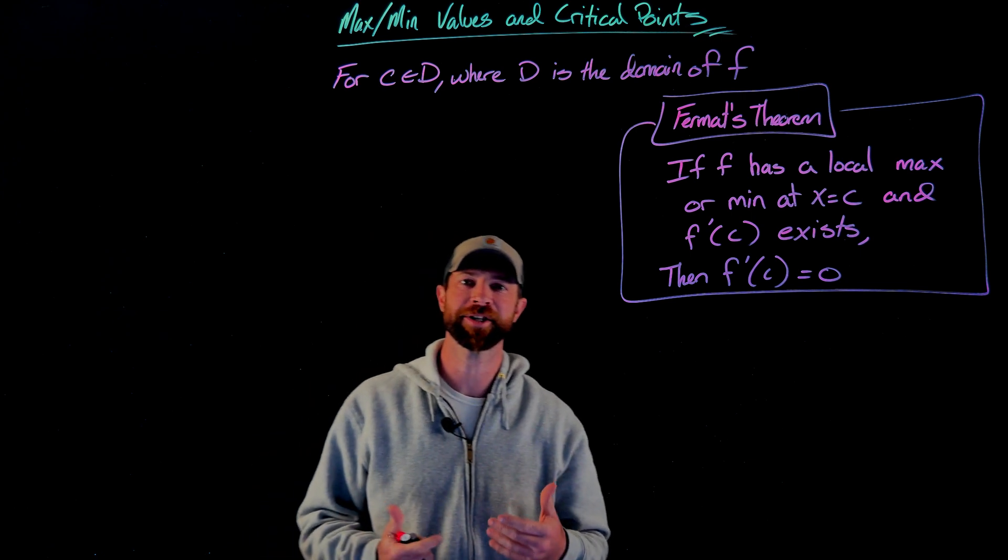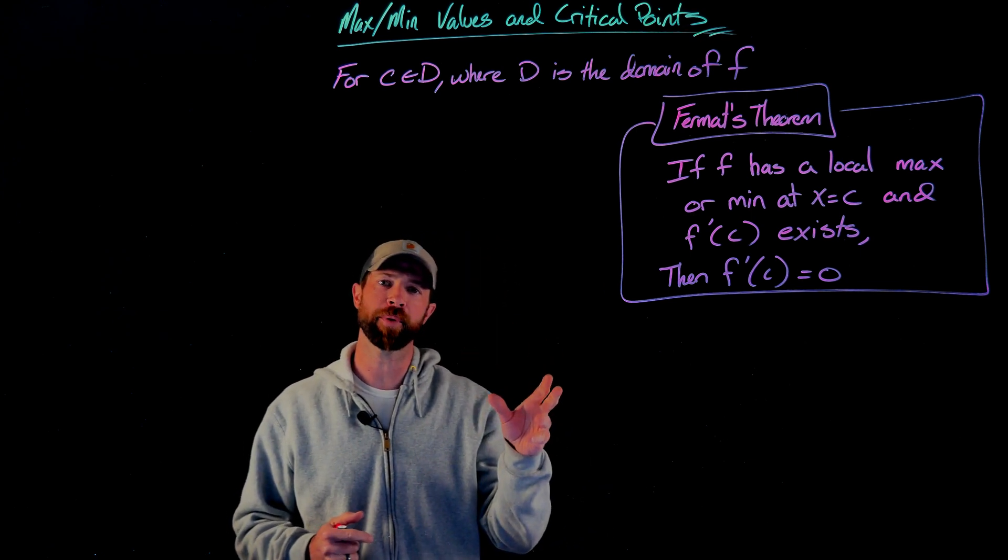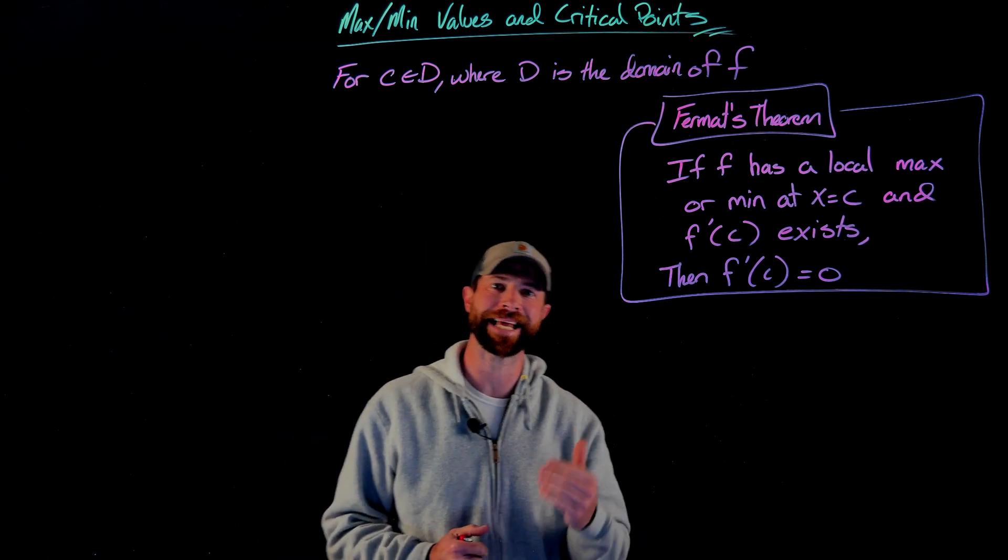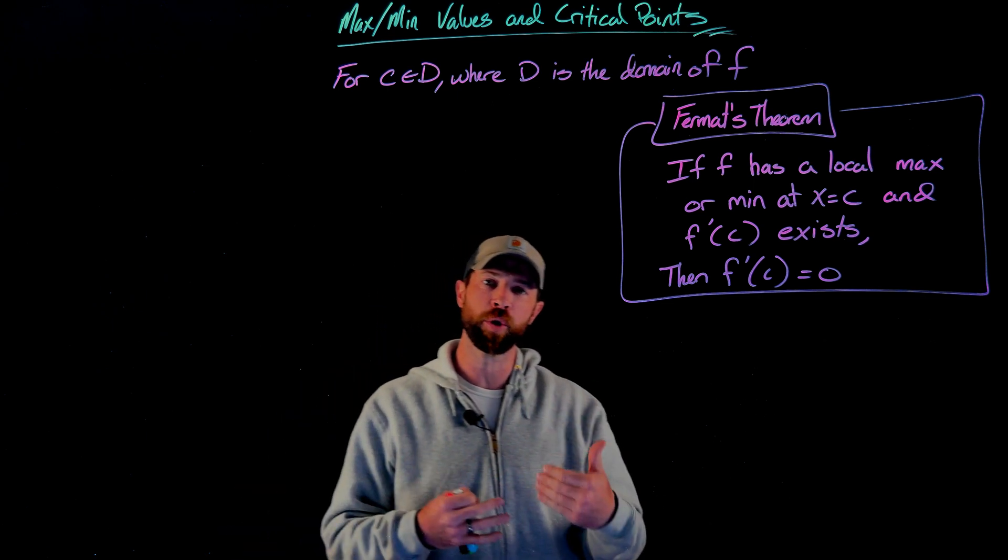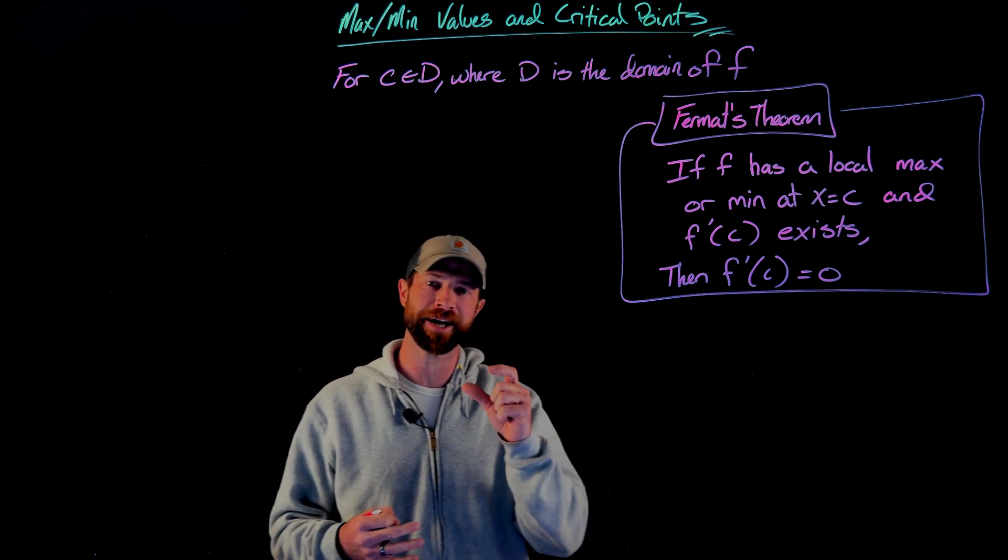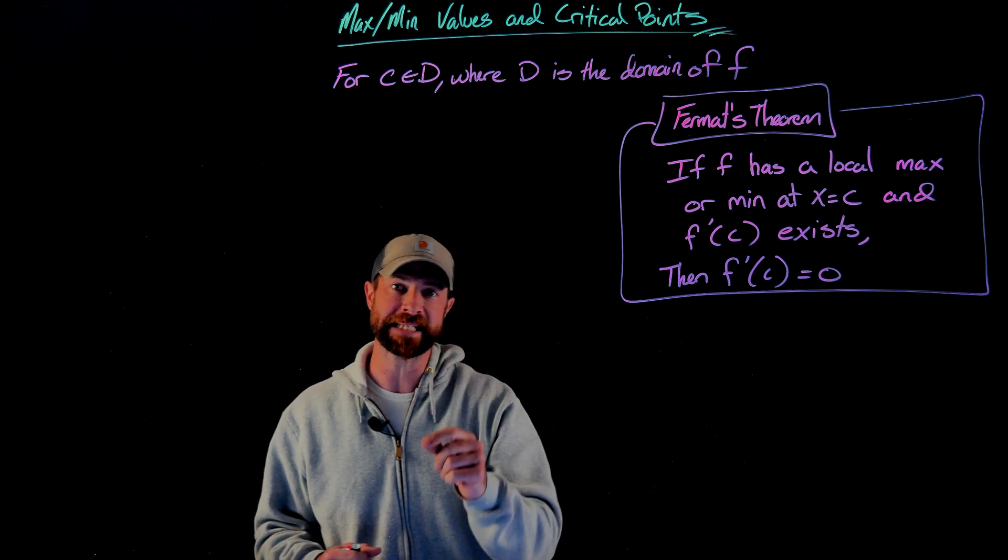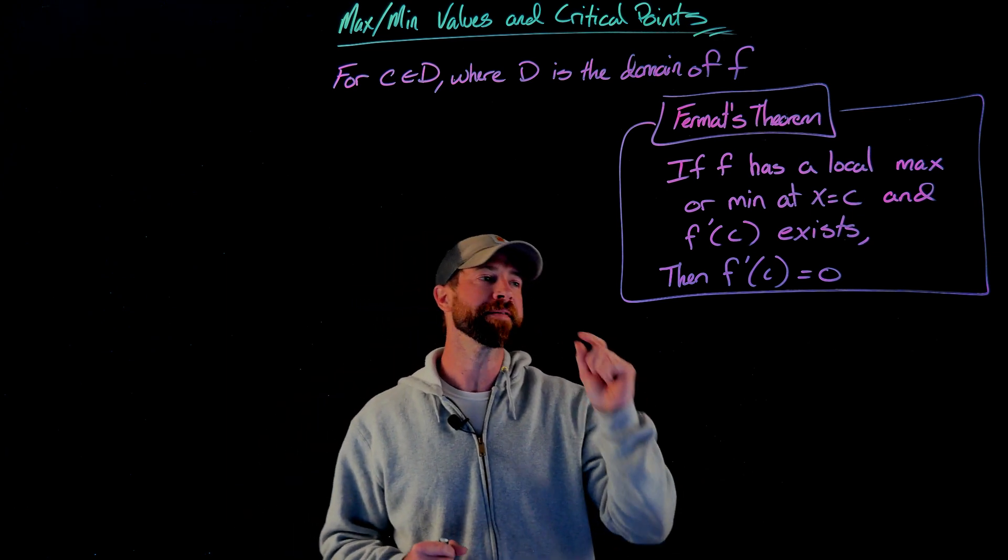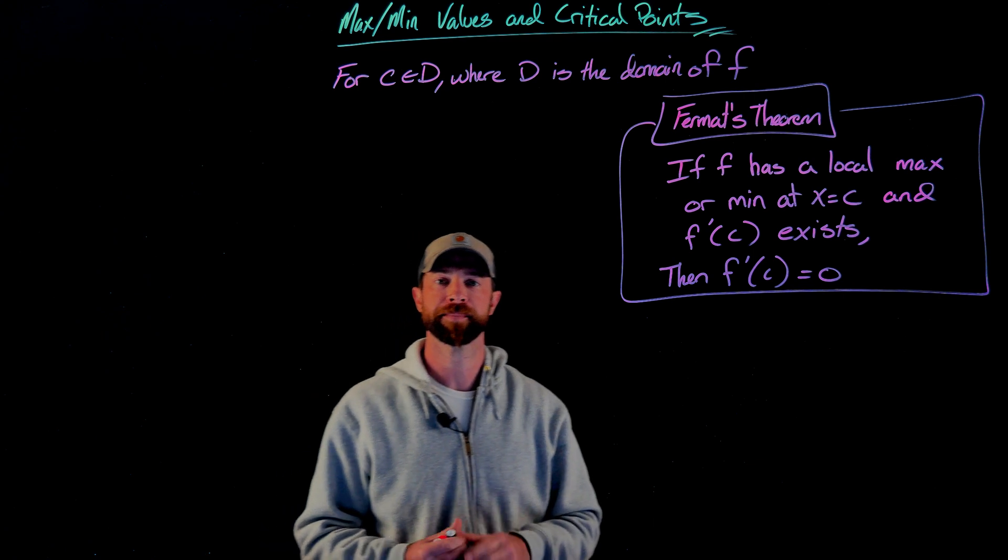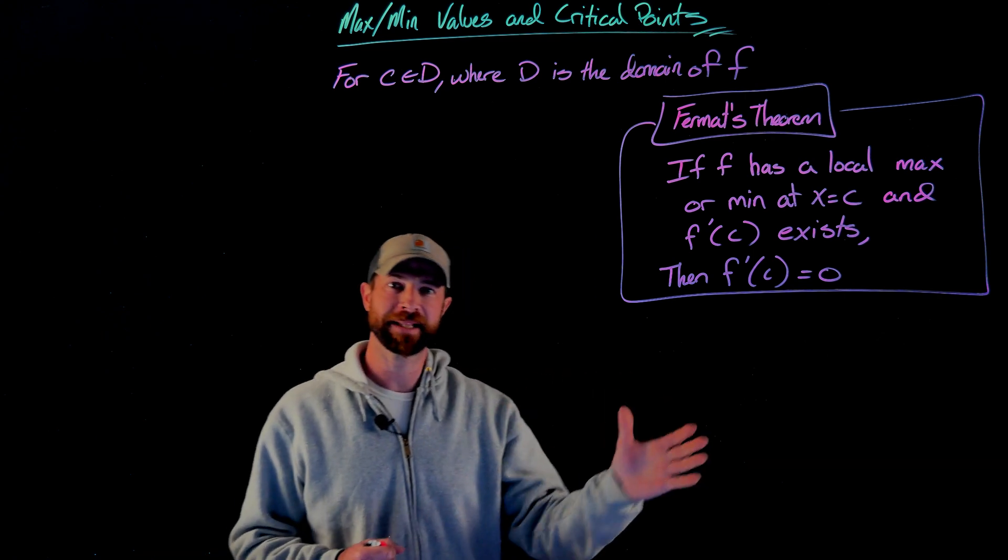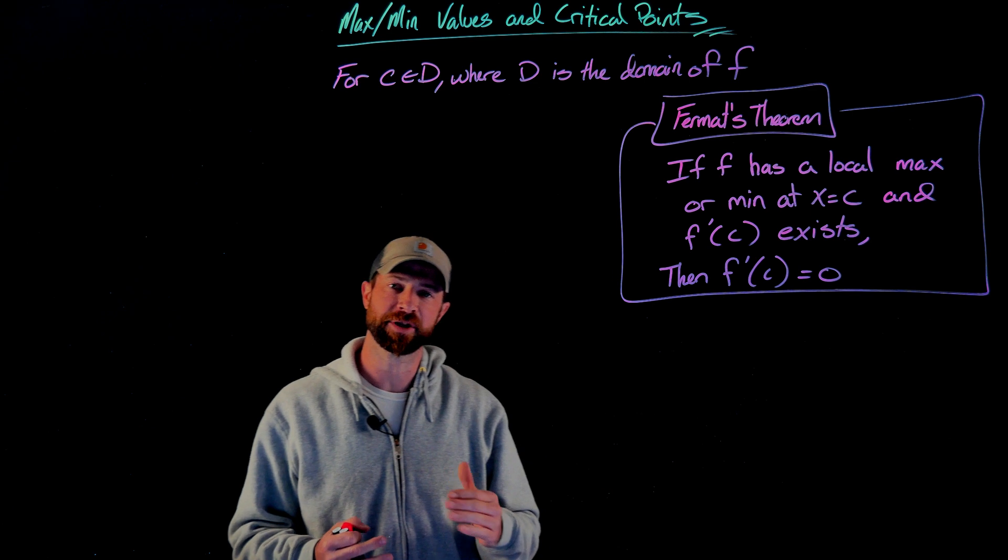All right, now let's get some calculus into the conversation. This is a really important theorem called Fermat's theorem. This states that if f has a local min or local max at some x value called c in this case, and the derivative exists, then the derivative must be equal to 0. If you think about it from that last picture and what we've seen before, that makes sense, right?